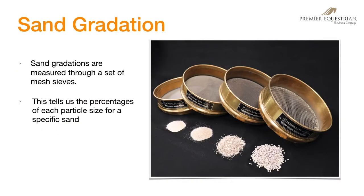Sand gradations are measured through a set of mesh sieves. The variation in percentages of different particle sizes is called a gradation. A sample of sand is placed atop a mesh with a variety of size openings. When the mesh is shaken, smaller pieces pass through while the larger pieces are retained on the mesh. This technique is how a gradation report is achieved.